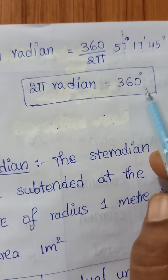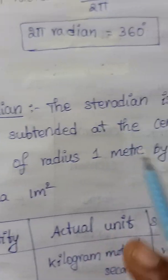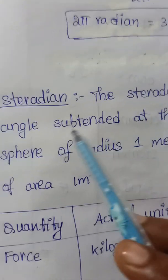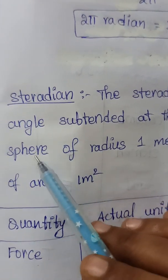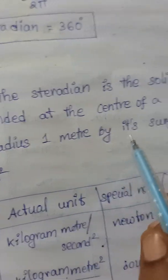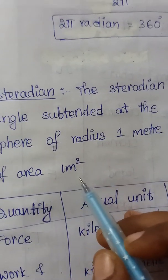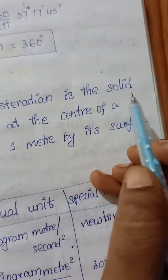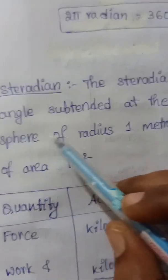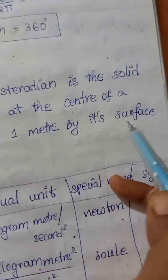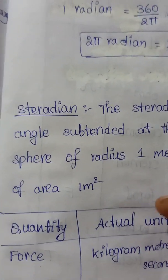Now, steradian: note that radian is related to a circle, while steradian is related to a sphere. The steradian is the solid angle subtended at the center of a sphere of radius 1 meter by its surface of area 1 meter square.